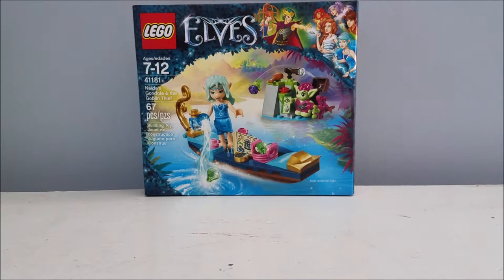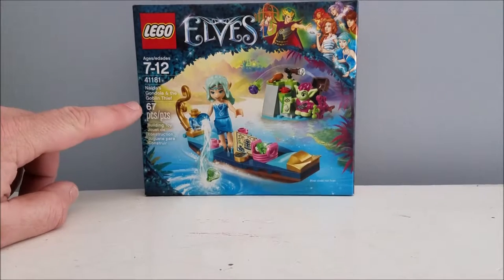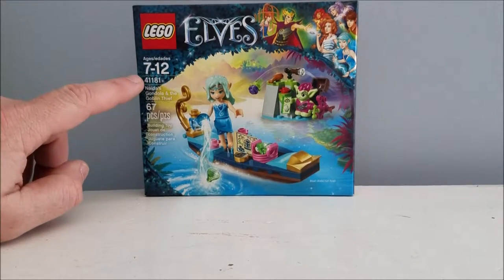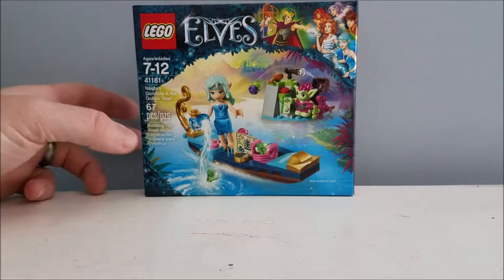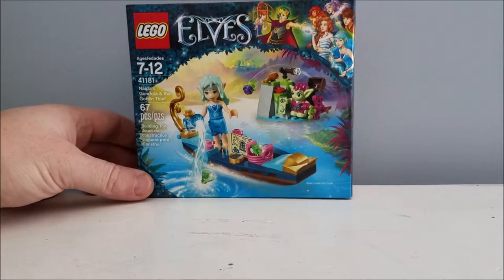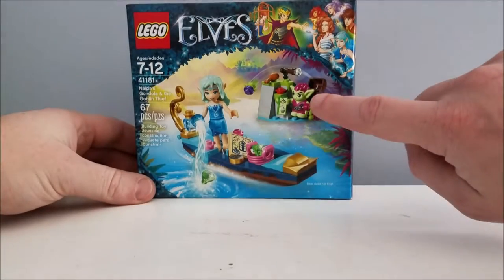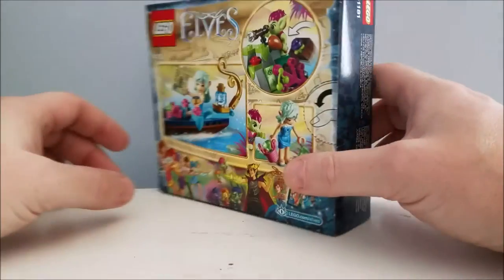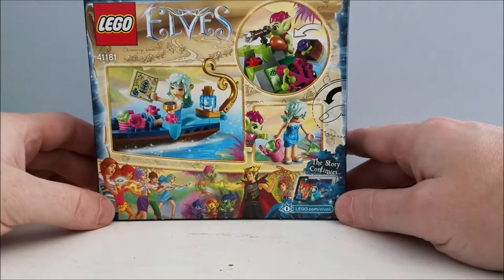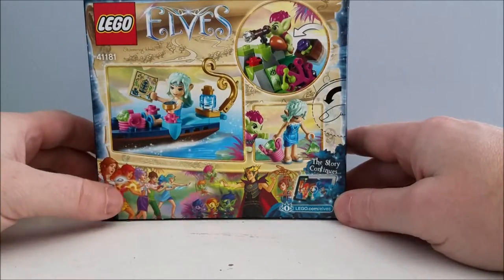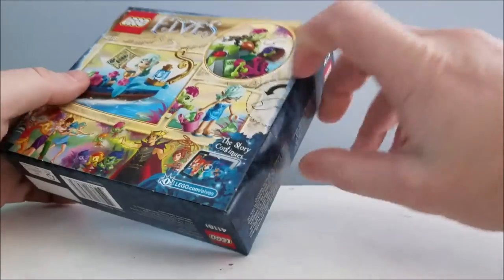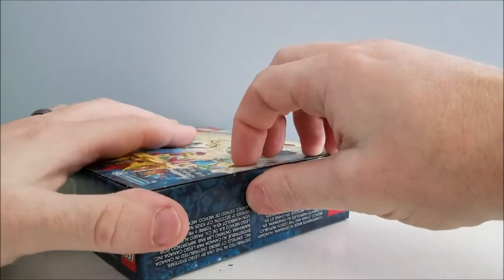Hey everyone, today we have a new Lego set. This is from the Lego Elves collection, Naida's Gondola and the Goblin Thief. You can see it's got 76 pieces and this is number 41181. In the front of the box you can see Naida as well as the goblin thief, he's right over here with his crazy purple hair. On the back of the box we have more cool pictures. So let's begin.